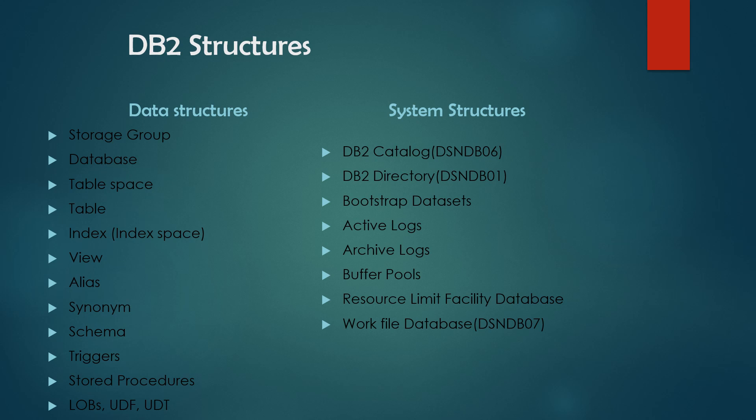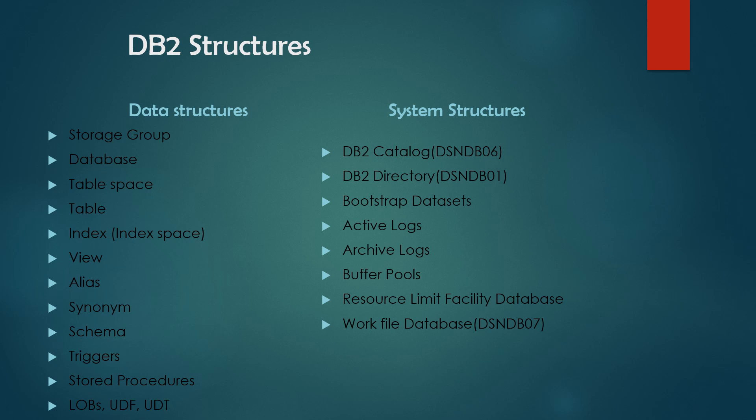Next is the system structure. In system structure we have DB2 catalog, DB2 directory, bootstrap dataset, active log, archive log, buffer pool, resource limit, work file database, and more. So first we'll understand data structure.